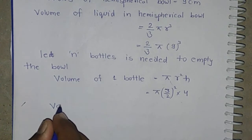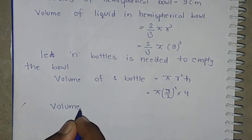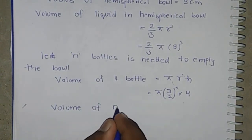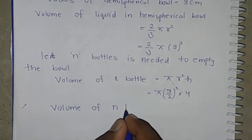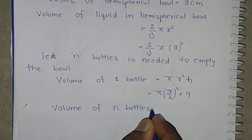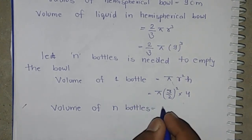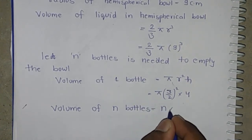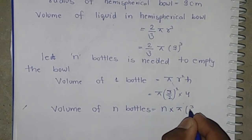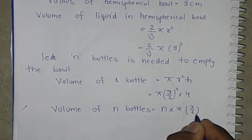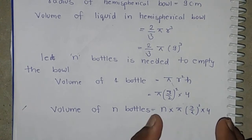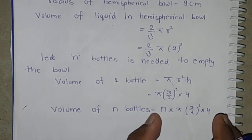Then the volume of N bottles is equal to N × π × (3/2)² × 4.